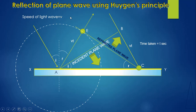Using Huygens' principle, we have to prove that i must be equal to r. Since Huygens' principle is a geometrical construction, while constructing the reflected plane wave and incident plane wave we obtain two triangles: triangle ABC and triangle AEC.